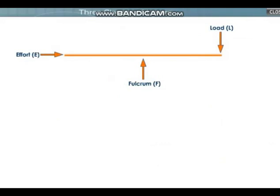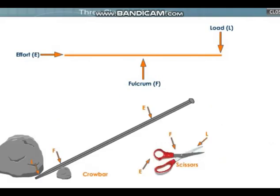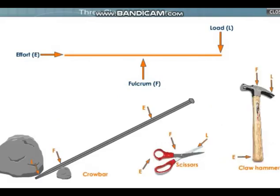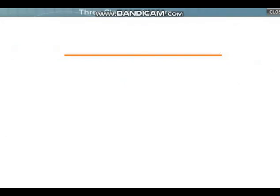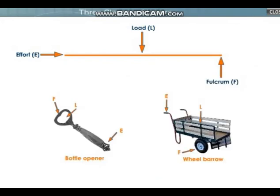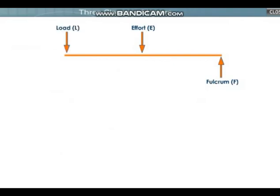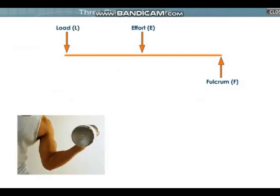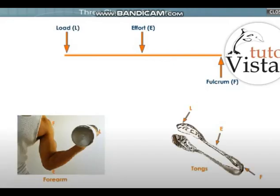In a class 1 lever, fulcrum is in the center, load on one side, and effort on the other side. In the second class, load is in the center, effort on one side, and fulcrum on the other side — like a bottle opener. In the third class lever, effort is in the middle, load is on one side, and fulcrum on the other side.